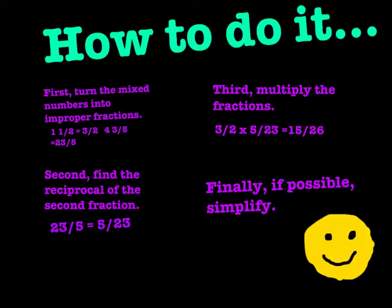Third, multiply the fractions. 3 over 2 times 5 twenty-thirds equals 15 over 26. Finally, if it's possible, simplify the fraction.